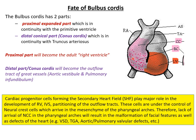At this stage, we must understand that cardiac progenitor cells forming the secondary heart field play a major role in the development of the right ventricle, the interventricular septum — which will completely divide the left and right ventricles — and also the partitioning of the outflow tract, including the truncus arteriosus. It is mainly the secondary heart field cells that are playing their role in this development.